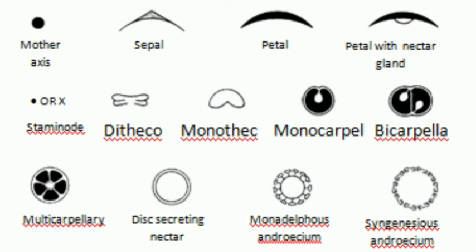Here we have various symbols which are used to frame many floral diagrams. The first symbol is a dot. A dot, either on the upper side or on the lower side, indicates the mother axis — whether the mother axis is vertical, horizontal, or diagonal. So a dot placed above the diagram, below the diagram, or in the diagonal direction indicates the mother axis.